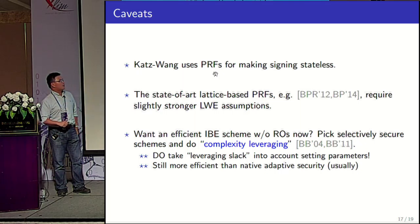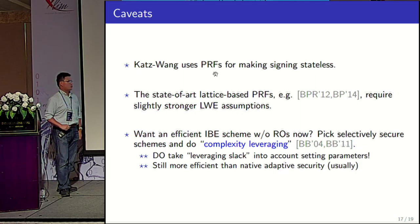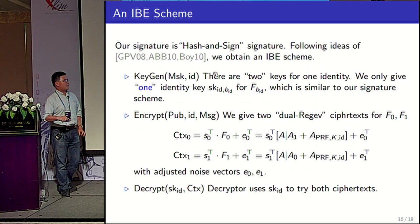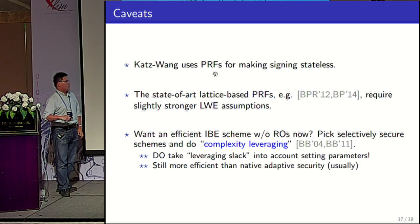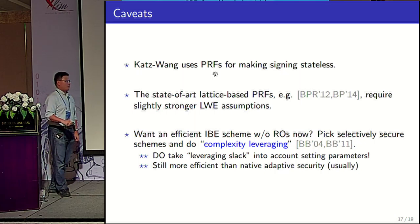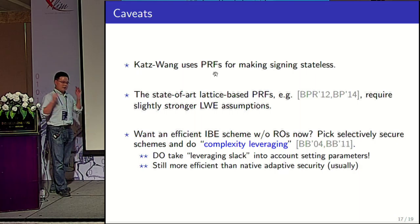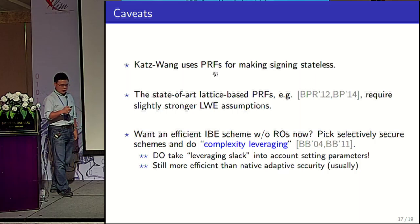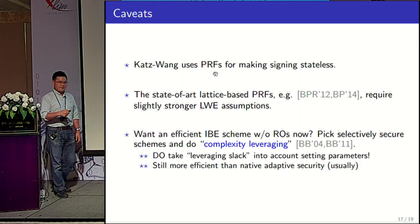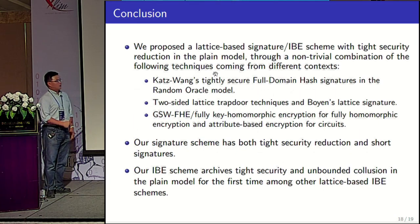This practice-versus-theory gap was also mentioned by the previous speaker. To conclude, we combine ideas from very different contexts: Katz's idea for proving full domain hash signatures in the random oracle model, lattice trapdoors, and fully homomorphic encryption.